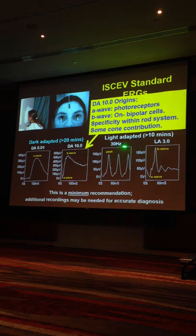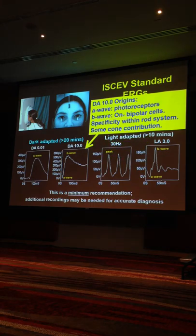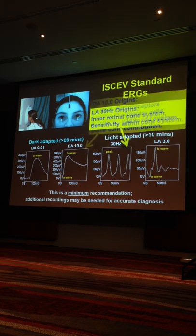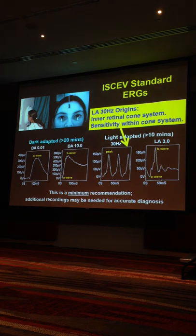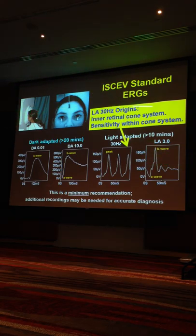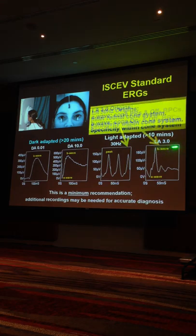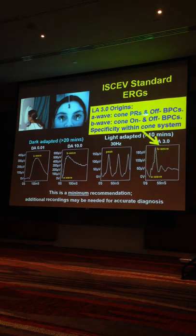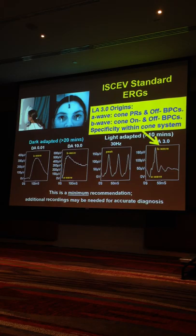We then bring the patient back up to photopic conditions by turning on a light in the back of the Ganzfeld bowl and flash a light at 30 times a second. The temporal resolution of the rod system is poor, so this is a cone-driven response, and arises at an inner retinal level, so it gives sensitivity but not specificity. Then we use a single flash cone ERG with a rod-suppressing background — now we have a cone A-wave from the cone photoreceptors and off-bipolar cells, and the B-wave from cone on and off bipolar cells.